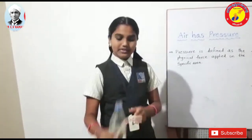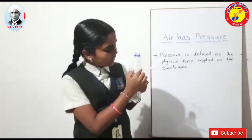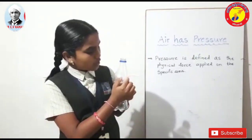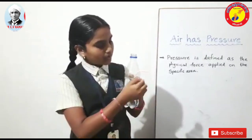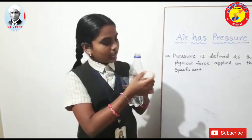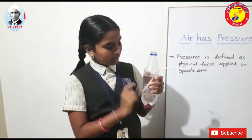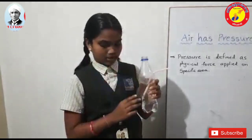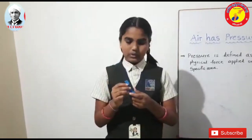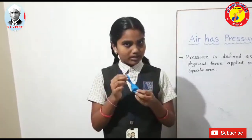First, we take a bottle and make a small hole in it. We insert a straw into the bottle. We fill the bottle with some water. Then we take a balloon, blow it, and insert the balloon into the mouth of the bottle. Water will come out due to the air pressure.